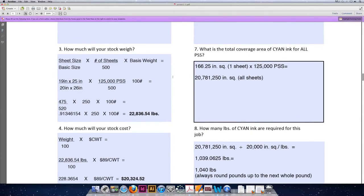Question three then asks, since you're buying 125,000 sheets of paper, how much does that stock weigh? The formula for calculating stock weight or paper weight is sheet size divided by the basic sheet size. In our case, we're purchasing 19 by 25 sheets of cover weight stock. So our sheet size is 19 by 25, and the basic size of cover weight stock is 20 by 26. The number of sheets that we're purchasing is 125,000 sheets. We'll divide that by 500.